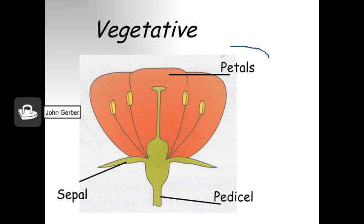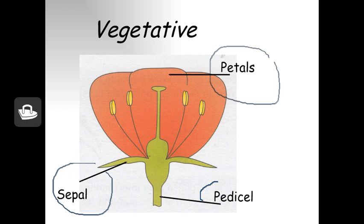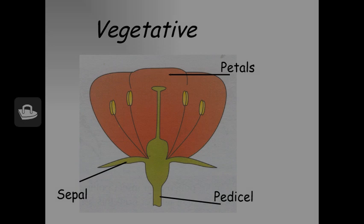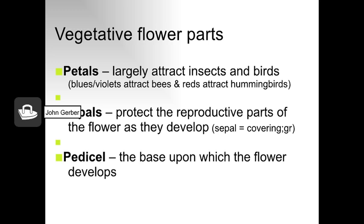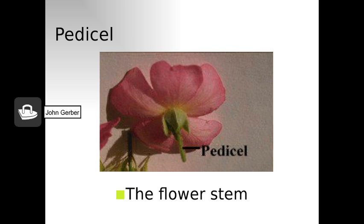You'll want to know about the petals and what they do, the sepal and what it does, and the pedicel and how it functions for the exam. The petals were designed to attract pollinators like insects and birds — blues and violets generally attract bees, and reds often attract hummingbirds. The sepals protected the reproductive parts of the flower as they develop; sepal is Greek for covering. The pedicel is the base upon which the flower develops — pedicel is Greek for little foot. It's at the foot of the flower and connects the flower to the stem.